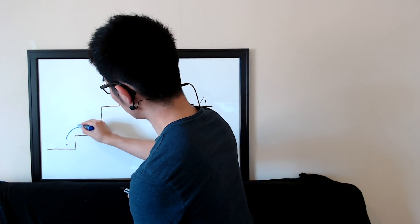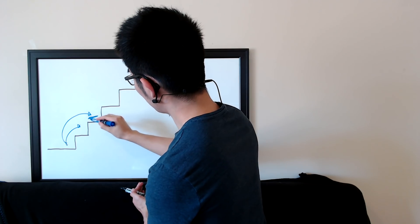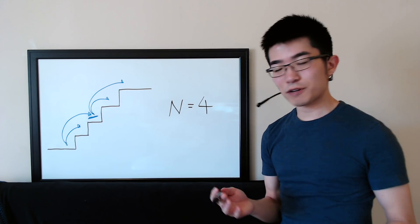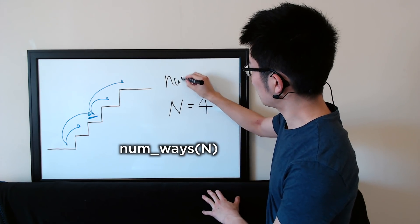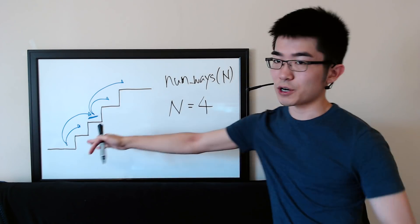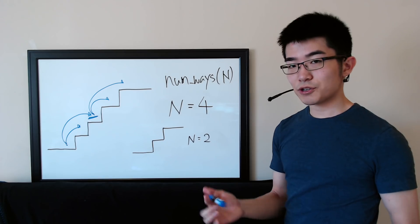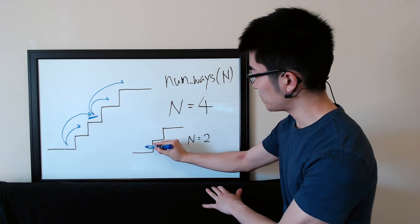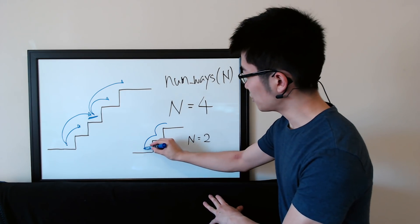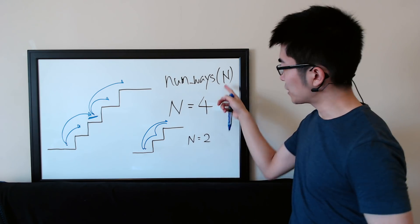From the bottom, you can only go one step or two steps. The problem is writing a function called num_ways which takes the positive integer n and returns the number of ways you can go from the bottom to the top. If the given n is 2, there are only two ways: the first way is taking one step at a time, the second way is taking two steps. So num_ways should return 2 if n is 2.